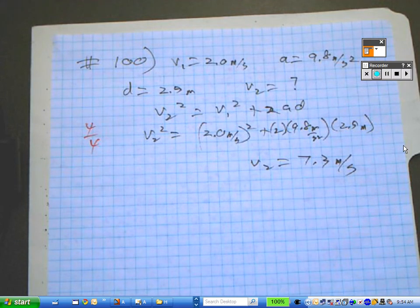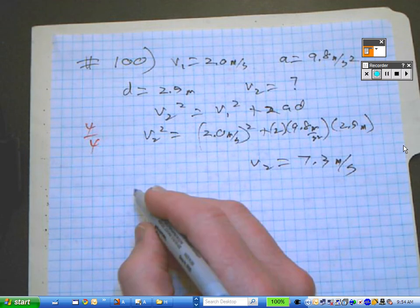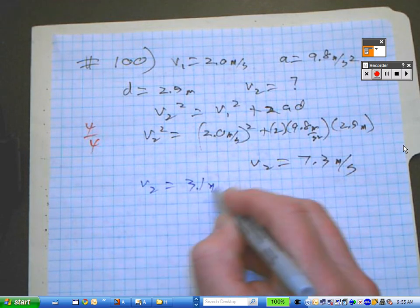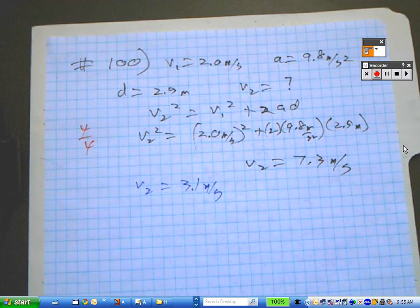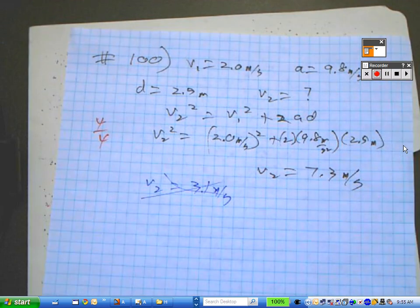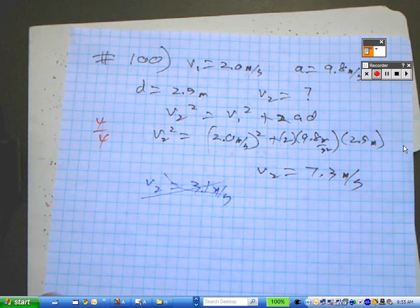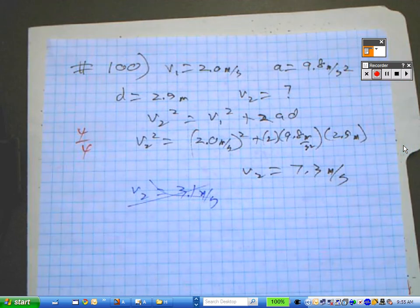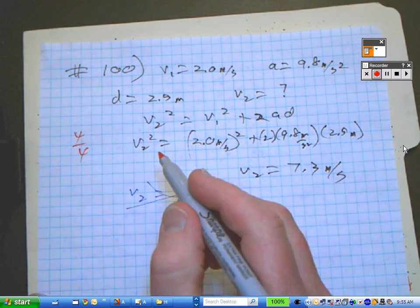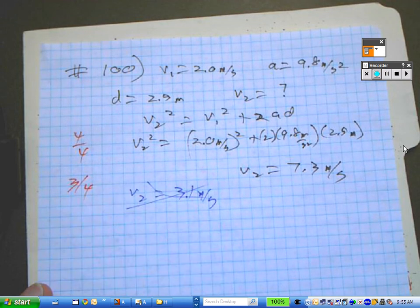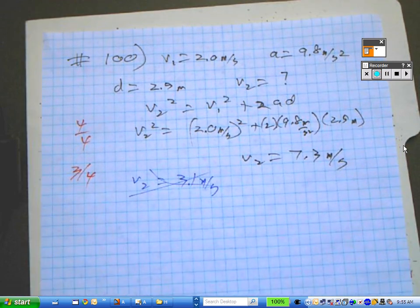But let's say that instead of getting 7.3 meters per second, you did some things wrong. You tried it and you made an error. And instead, you got a V2 of 3.1 meters per second, something that was wrong. Now, this is a wrong answer. But still, I want to give you very much credit for actually trying the problem. And if you show your work and really try it, I will give you three out of four for just trying it, even if you mess it up.